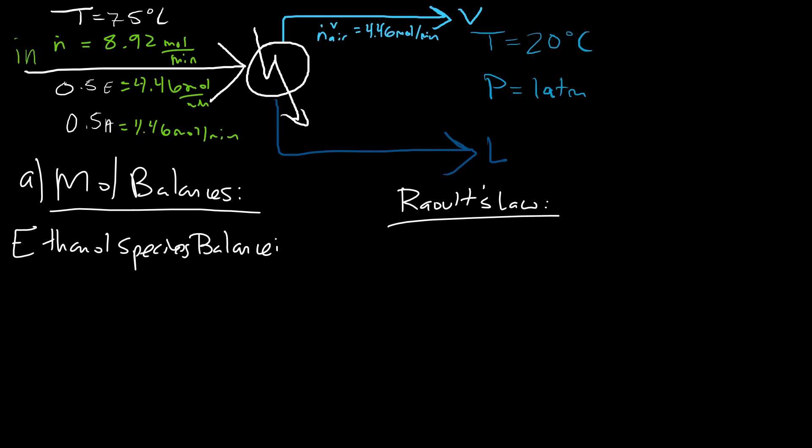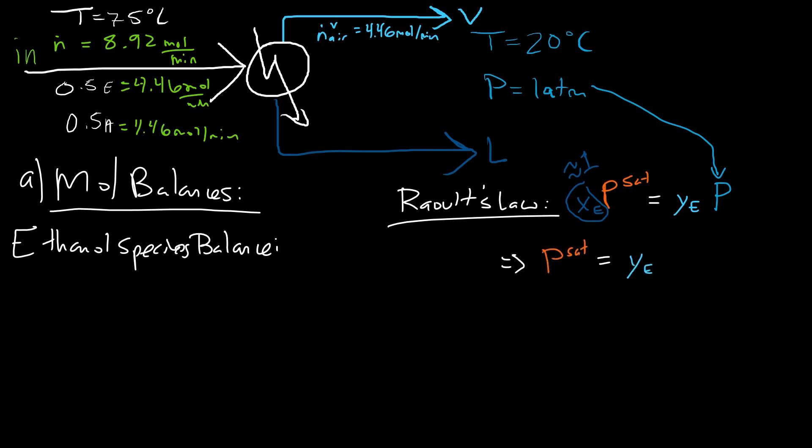When we have ideal gas, ideal solution, and thermodynamic equilibrium, we naturally invoke Raoult's Law, which gives us the second equation for our two unknowns. Raoult's Law states: the mole fraction of ethanol in the liquid times the saturation pressure of ethanol equals the mole fraction of ethanol in the vapor times the total pressure. Based on our air-balance assumption, the liquid mole fraction of ethanol is approximately one, and the outlet pressure is one atmosphere.